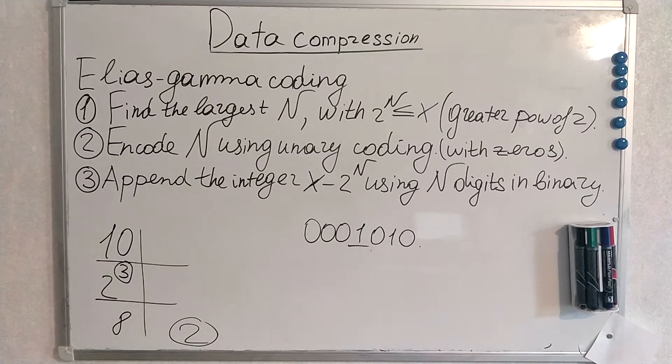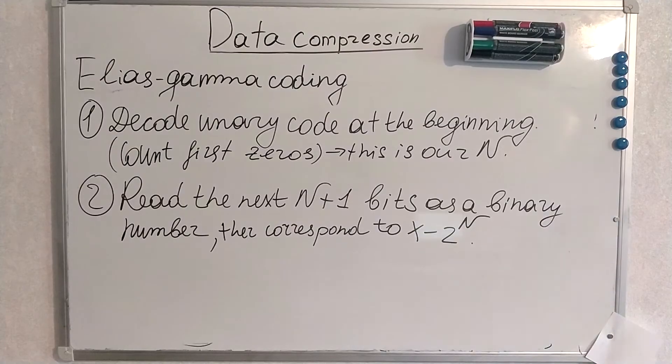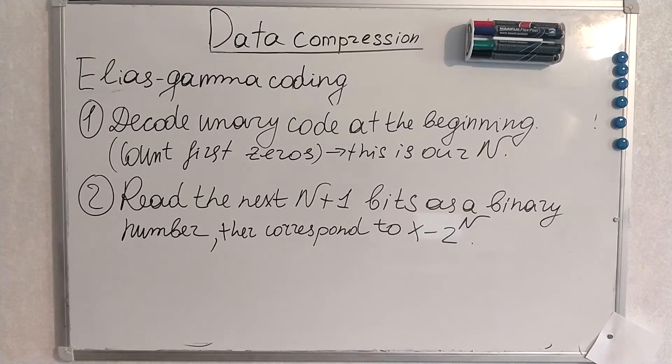Let's try to decode it. To decode sequences generated by Elias-gamma coding, we have to follow just two super simple steps. We decode unary code at the beginning.